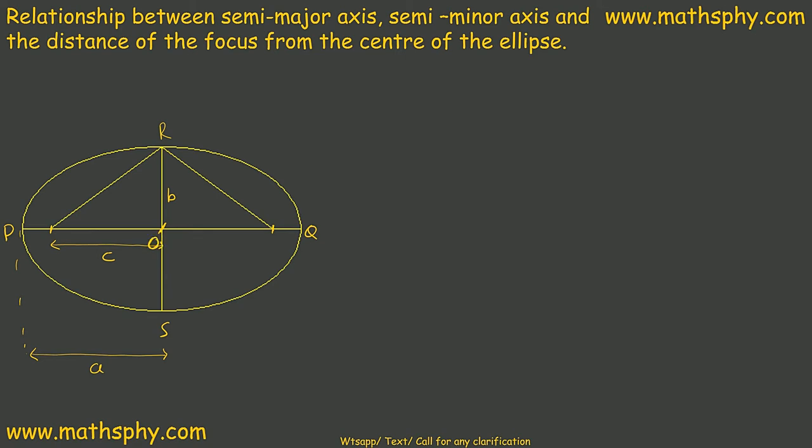Now let's take this point as focus number 1, focus number 2. So OF1 is C, OR is B. In that case we have to calculate RF1. This is my 90 degrees.